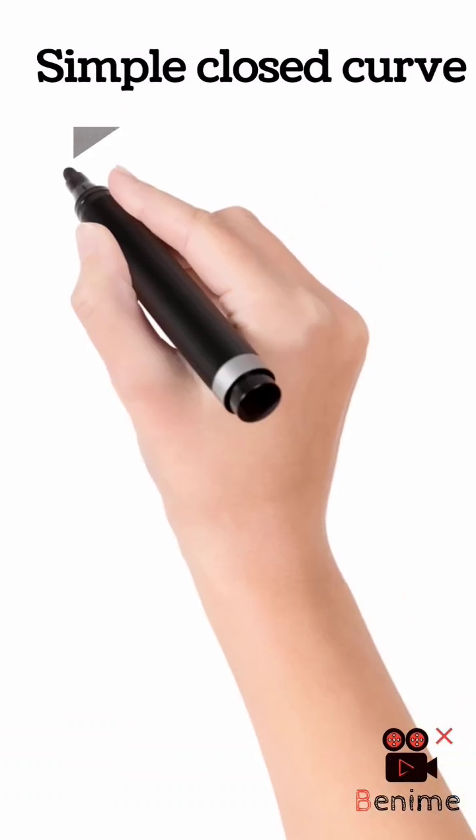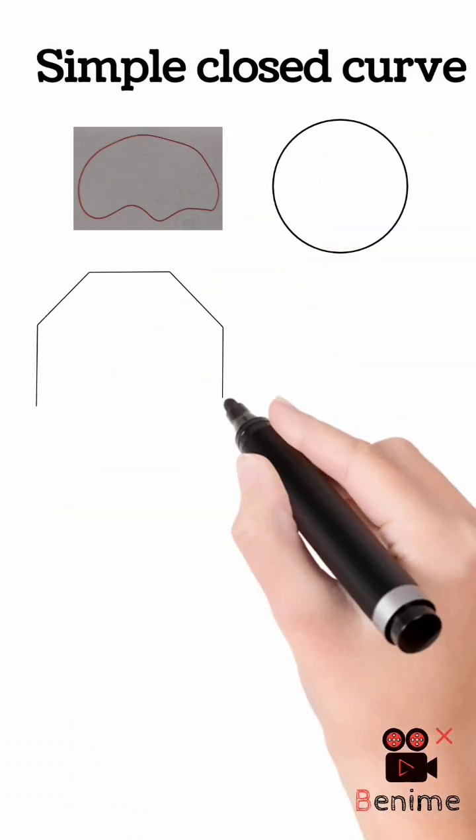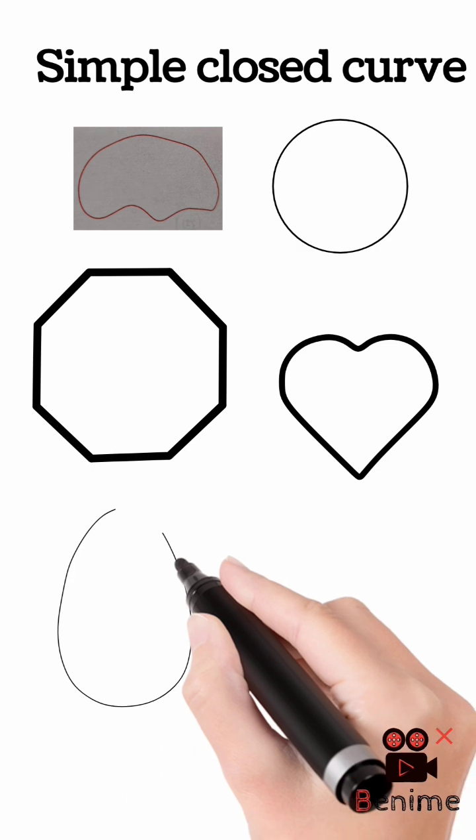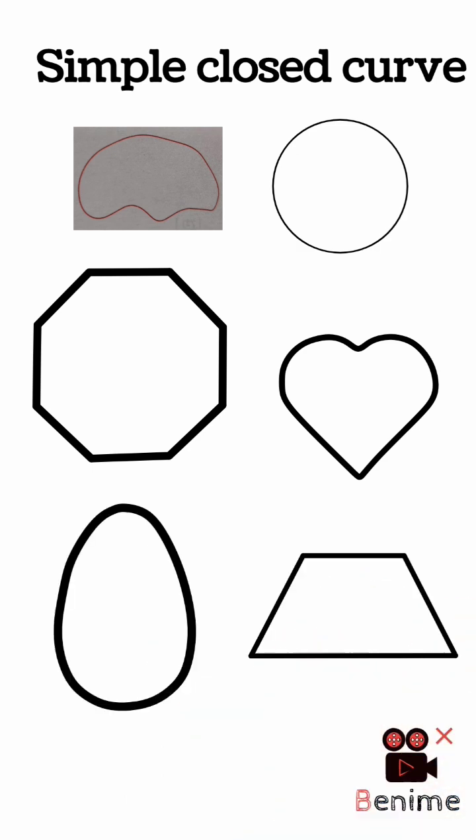A curve which does not cross itself at any point and has the same starting and ending point is called a simple closed curve.